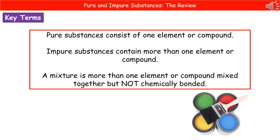Welcome to our review on pure and impure substances. The first thing we really need to know are a few key terms. When we're talking about a pure substance, we're talking about one that consists of only a single element or a single compound — literally just one thing, nothing else.